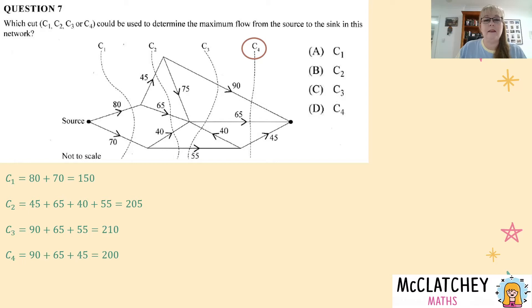Now it's tempting to pick the maximum number which would be cut two. However you need to remember that the maximum flow through the network is going to be equal to the minimum cut. And the reason for that is the minimum cut is the limitation on the whole network of how much can actually pass through. So our minimum cut here if we look at our different cuts is actually C1. So that's our correct answer A.